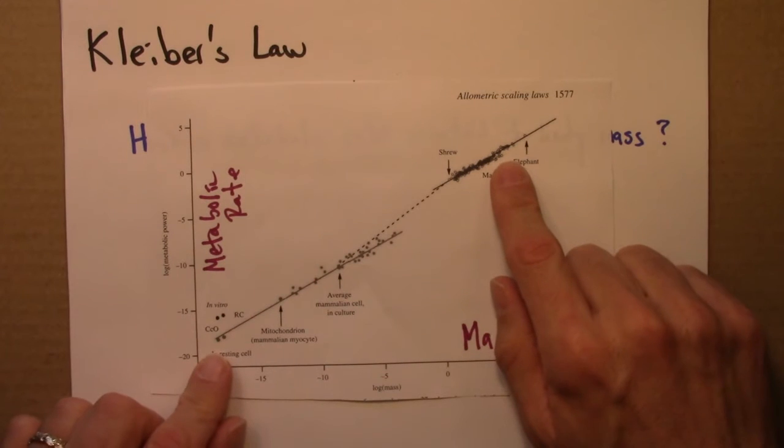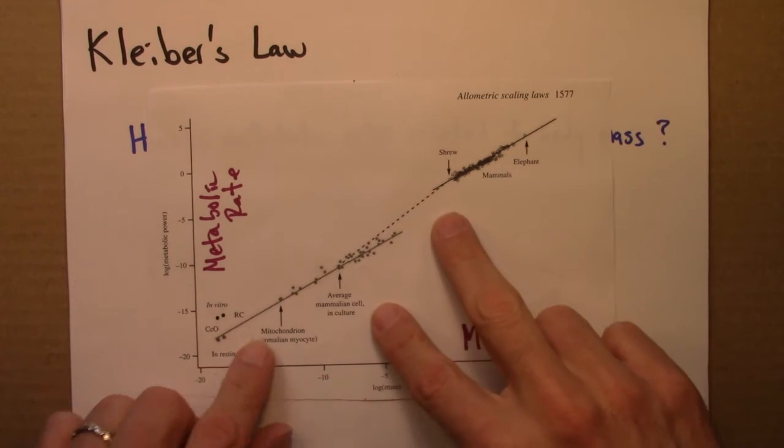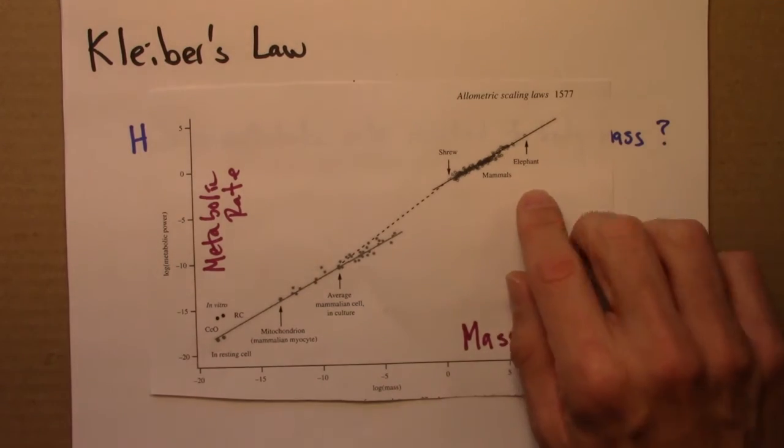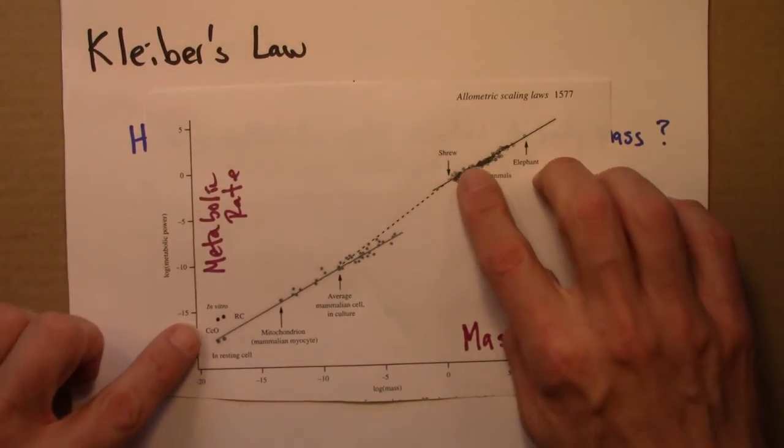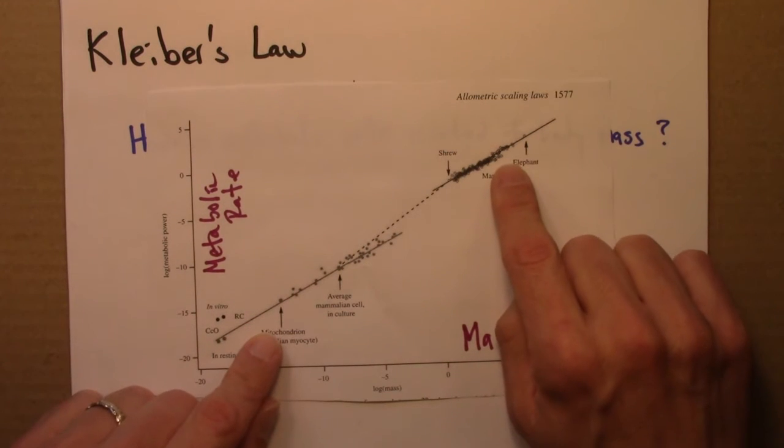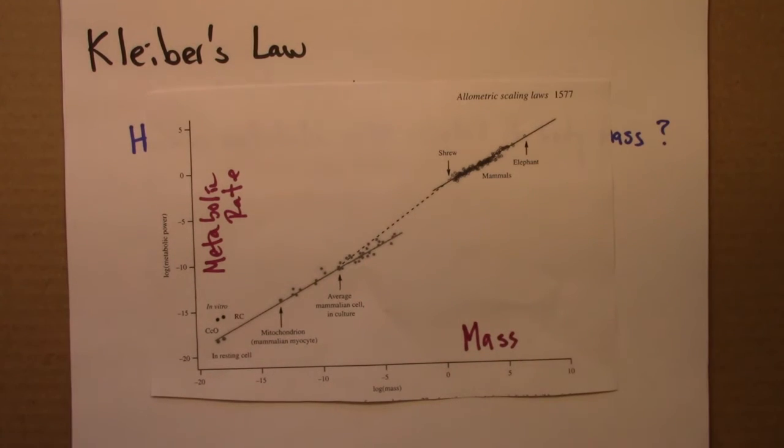More careful statistics has been done on this, and it's been shown that, yes, this is indeed very well described by a power law. These two power laws have the same slope, but they'll have different intercepts. But the slope is the same, and it's very, very close to three quarters. So this poses a number of questions.